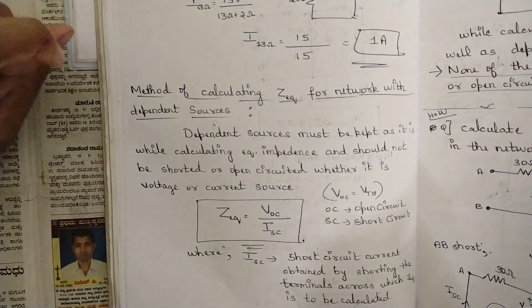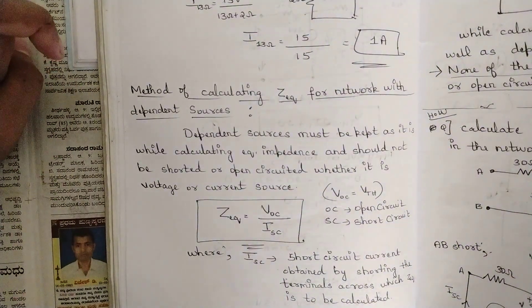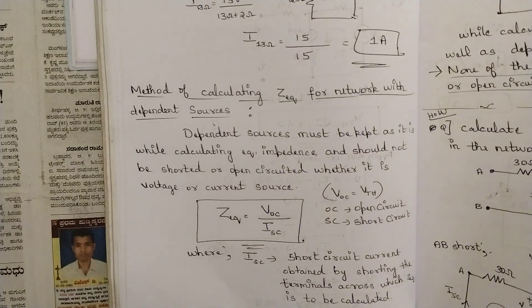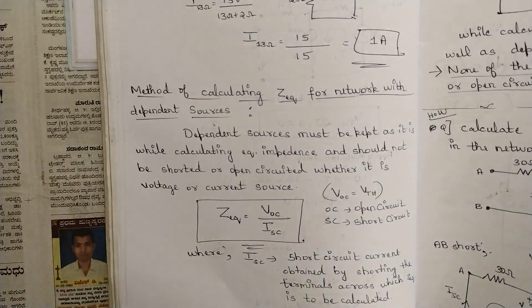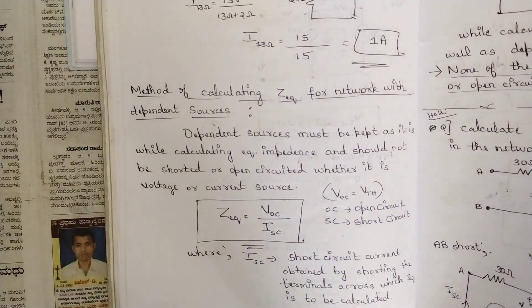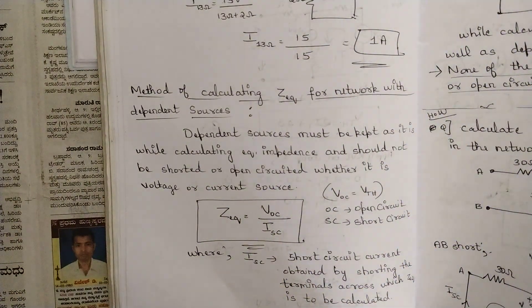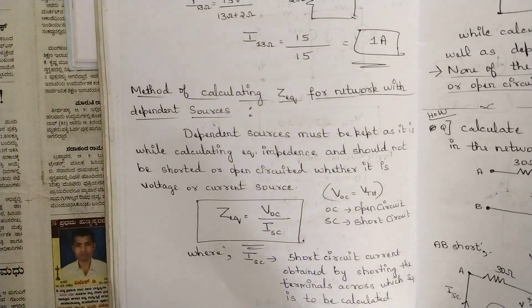Hello everyone, welcome to this new video. In our previous videos we discussed the proof of Thevenin's theorem and two important kinds of problems. Now we have one more kind of problem where dependent sources come into picture — what changes are required in order to solve the problem when we have any kind of dependent source in the circuit.